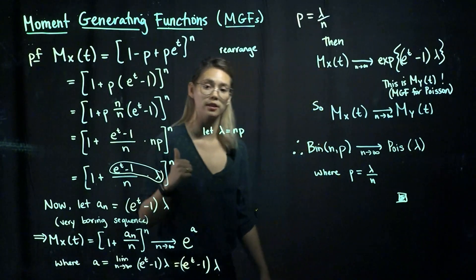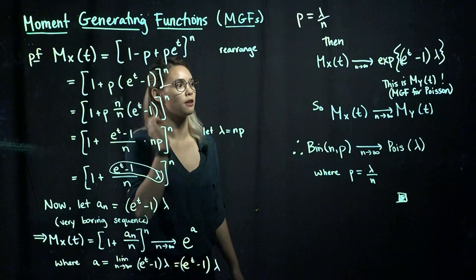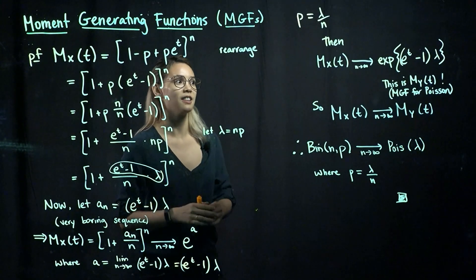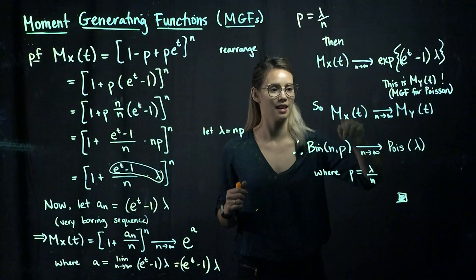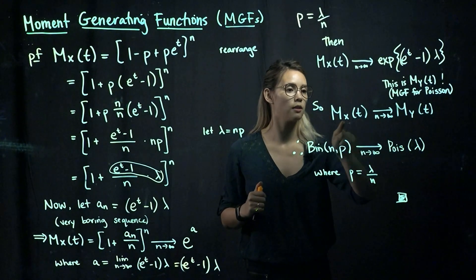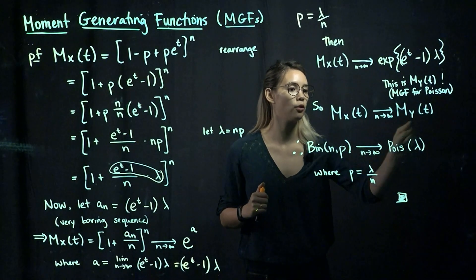Now, remember in the previous video, I pointed out the MGF for a Poisson, and it looks just like this. So that's great. So this is saying that our MGF for binomial is going to converge to the MGF for Poisson.